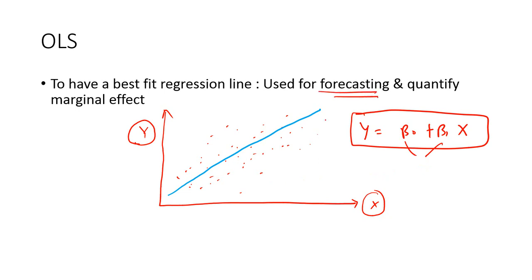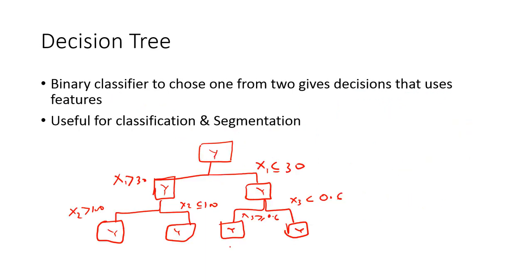This can be used for two purposes: one is for forecasting, so you can forecast for the future. The second one is to quantify the marginal effect. What is marginal effect? If you increase X by some amount, what is going to be the corresponding increase in Y - that's marginal effect. You do that by taking the first derivative of your target variable.